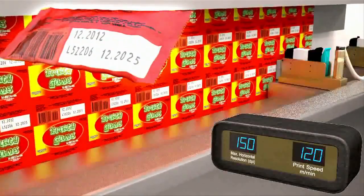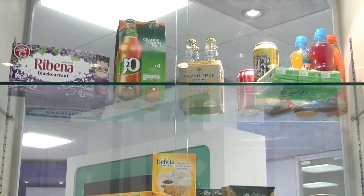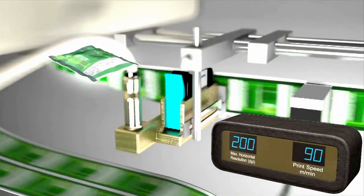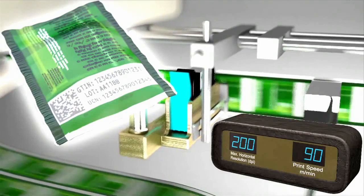Such as confectionery—we see more and more substrates becoming glossy, different materials like PP, so we need inks that can stick to them and enable the HP TIJ cartridge to run them.